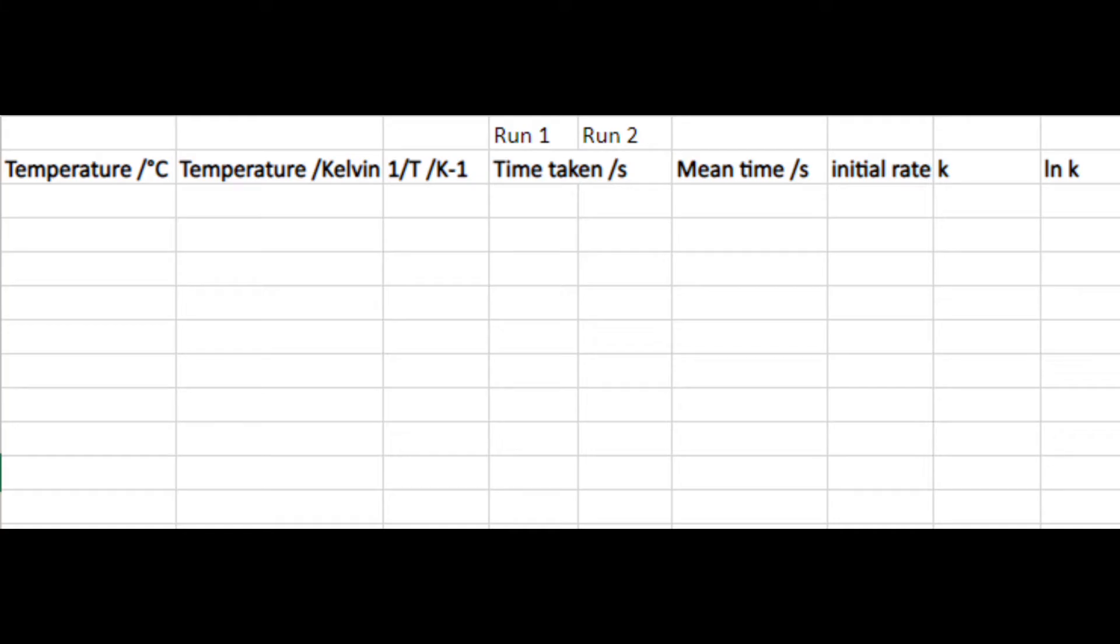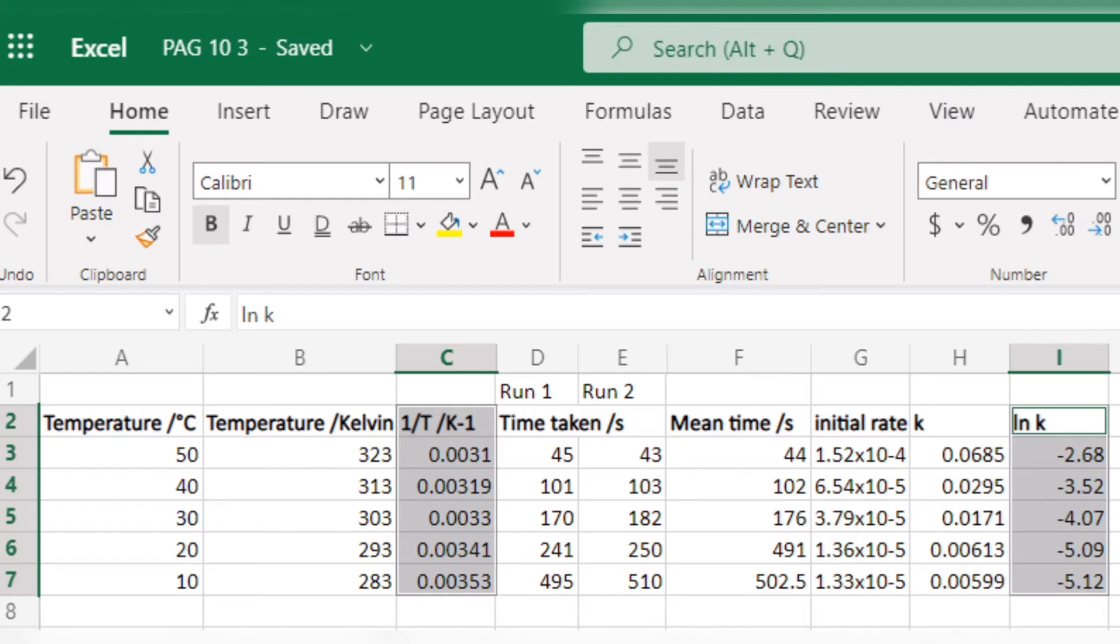So first you want to create a table on Excel and put in each of these headings. Then after we've done the experiment we will have a table with results for temperature and time and we can work out the rest of the things.